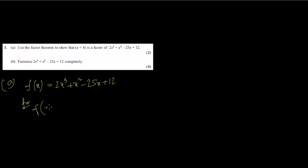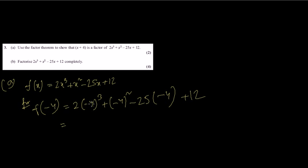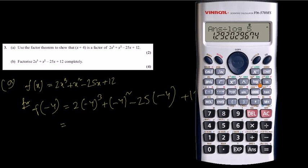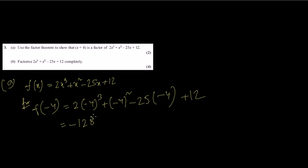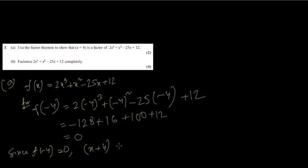Now we have remainder theorem. We have to show that x plus 4 is a factor. Factor means remainder is 0. Let's write the whole thing as f(x) = 2x³ plus x² minus 25x plus 12. If the factor is x plus 4, we find f(minus 4). So: 2(minus 4)³ plus (minus 4)² minus 25(minus 4) plus 12 equals minus 128 plus 16 plus 100 plus 12, which equals 0. Since f(minus 4) equals 0, x plus 4 is a factor.